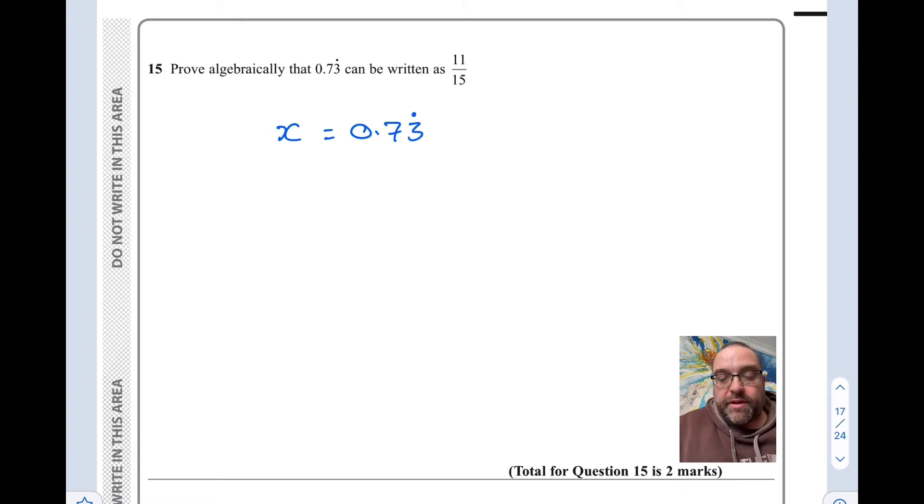Now the objective we need to achieve is to get two numbers that end with the recurring part being the only bit that's after the decimal point.